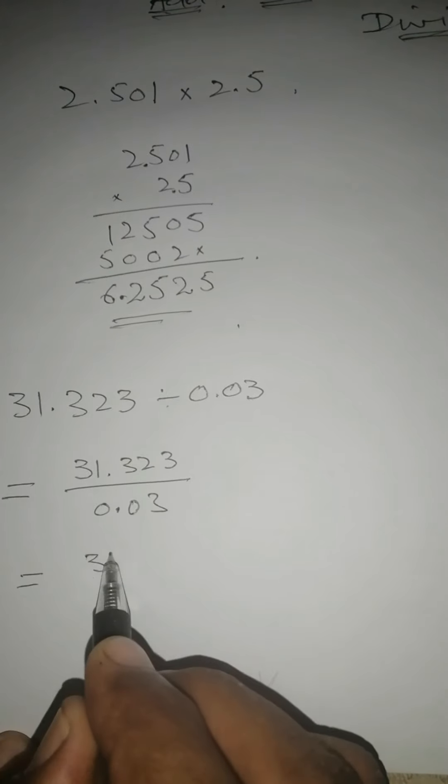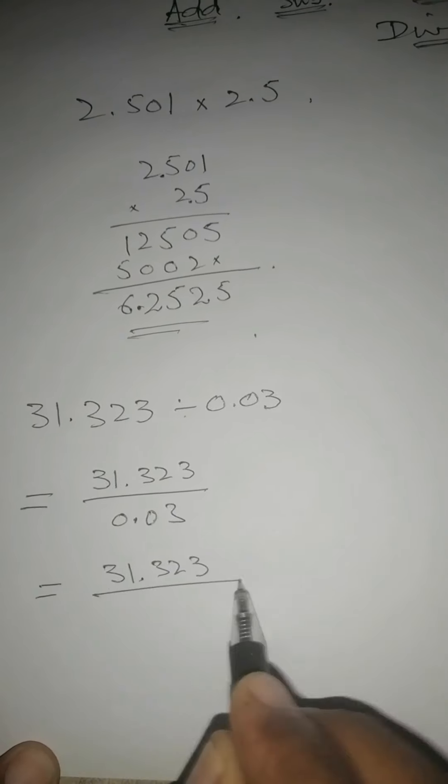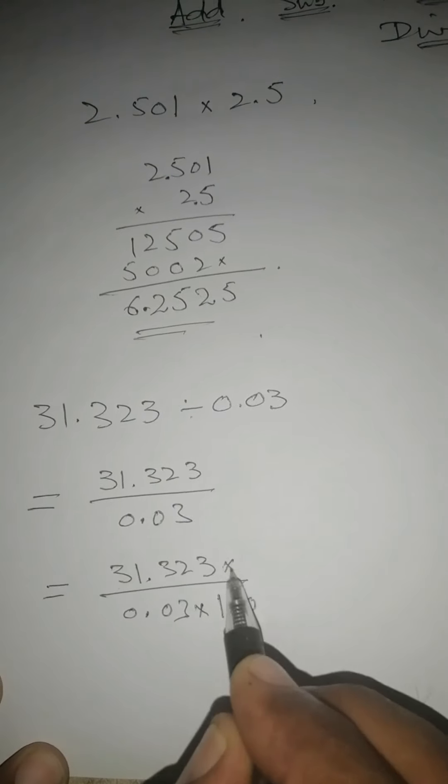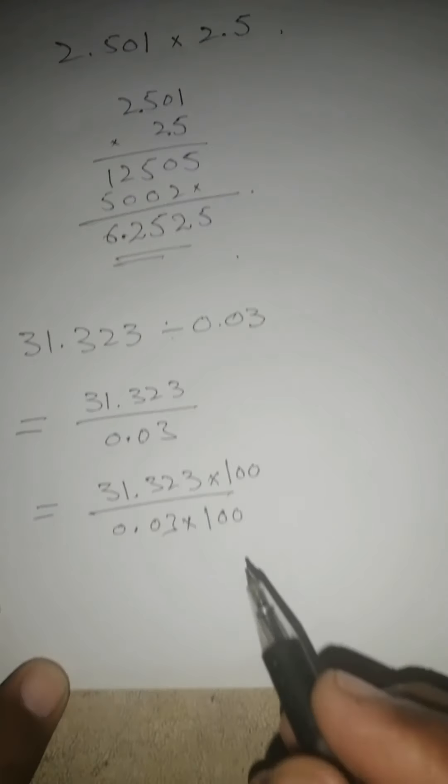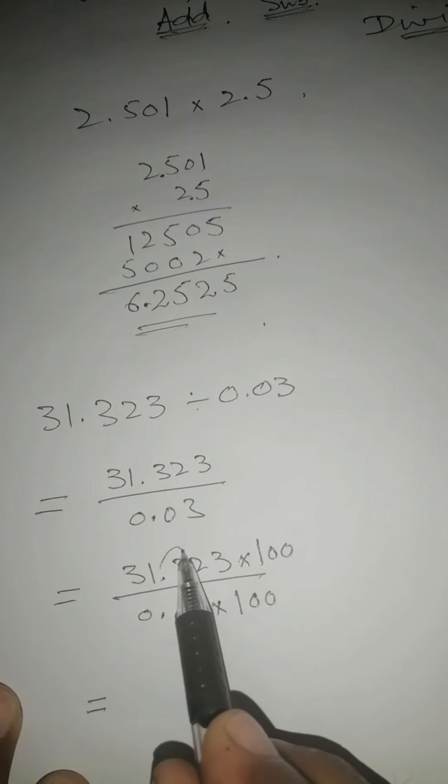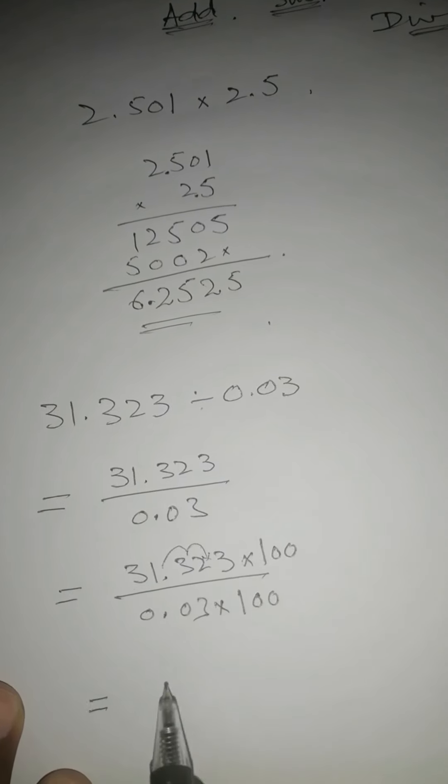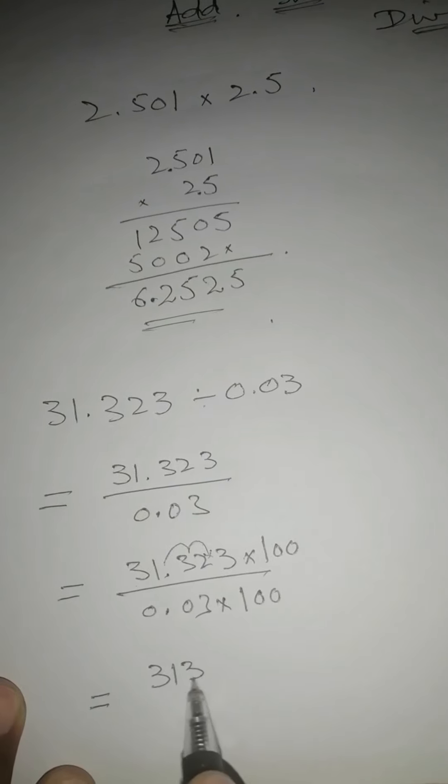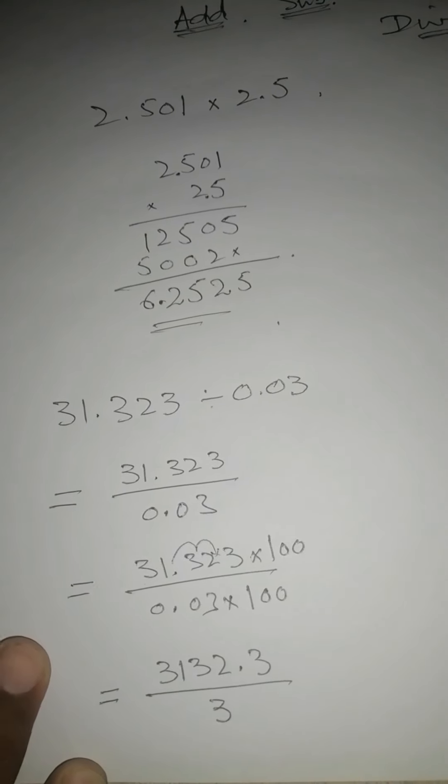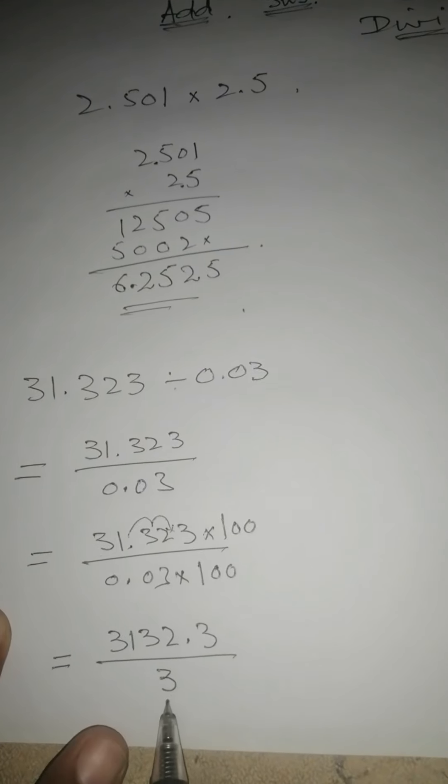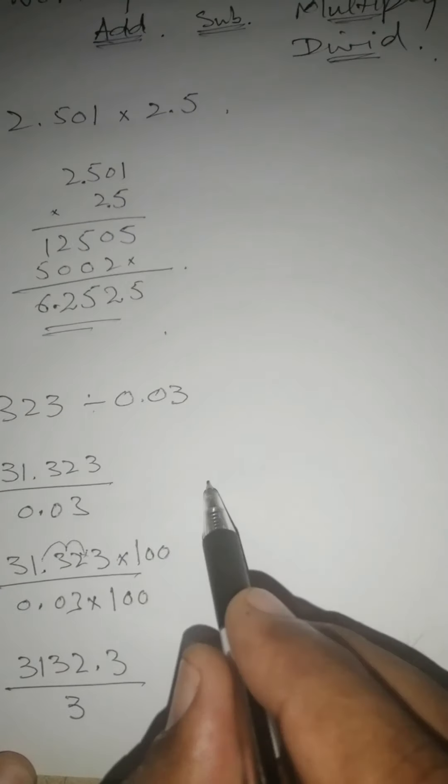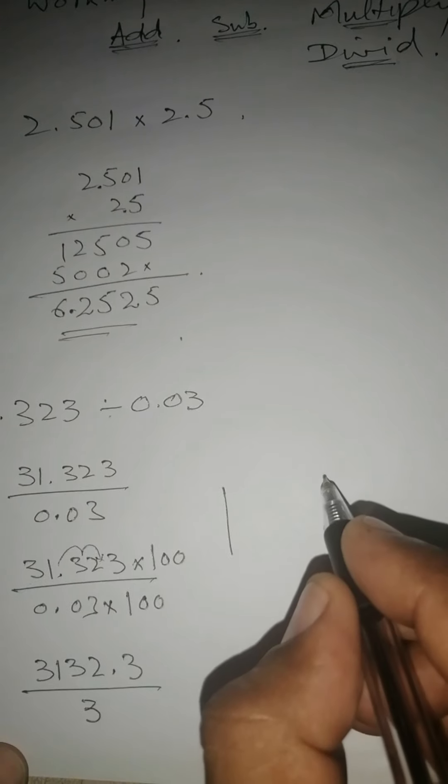This equals 31.323 divided by 0.03. Multiply denominator by 100, at the same time multiply numerator by 100 also. See, this becomes 31. When multiplied by 100, move two digits, this becomes 3132.3 divided by 3. When you multiply these, 3 is obtained. Now do the division. Division is very easy. In this, decimal is after one digit. Ignore this decimal. This becomes 3132 divided by 3.